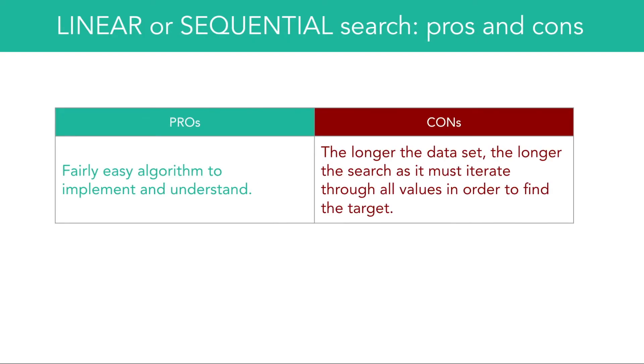Here's a pro and con for linear or sequential searches. While linear search is a fairly easy algorithm to implement and understand, a linear search is limited by the number of elements that are being searched. The longer the dataset is, the longer linear search takes, as it must iterate through all values in order to find the correct one.